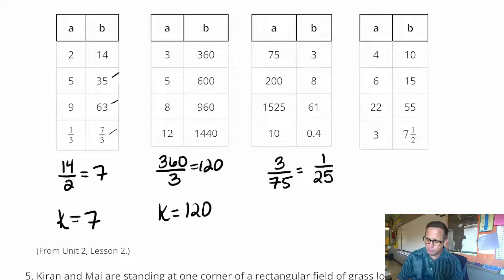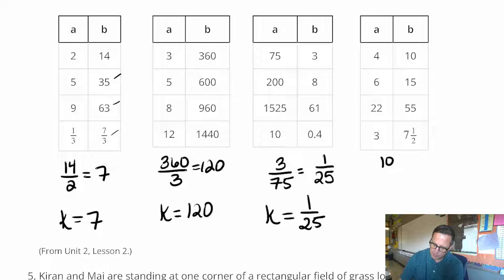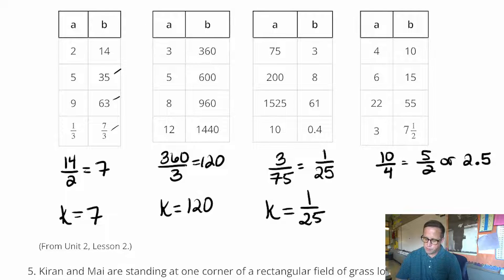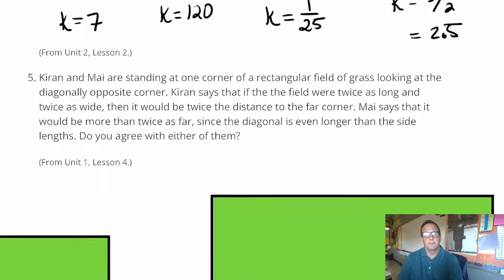I mean, that's really not like a terribly long decimal either. But I just like that better. And then for this one, we're going to do 10 divided by 4, which comes out to 5 over 2, or 2 and a half, 2.5. So our constant proportionality is 5 halves, or if you prefer decimal, 2.5.